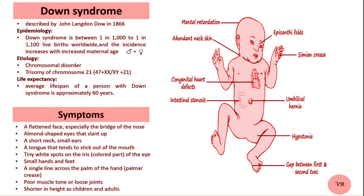The primary risk factor for Down syndrome is maternal age, but several other factors may also influence the likelihood. As a woman gets older, the likelihood of having a baby with Down syndrome increases, due to changes in egg cells over time that affect chromosome division. While maternal age is the primary risk factor, older paternal age may also play a role. Some studies suggest that men over 40 may have a slightly increased risk of fathering a child with Down syndrome.